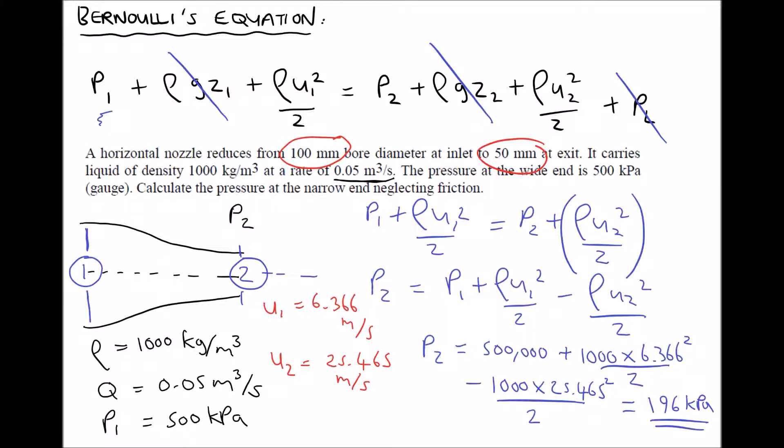So the pressure in the pipe at position 2 equals 196 kilopascals when compared with the pressure at position 1 of 500 kilopascals. The reason for this is as the nozzle reduces, the velocity at position 2 increases, so the fluid gains kinetic energy.